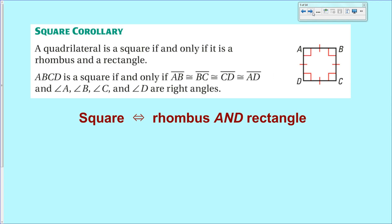And finally, the square corollary, which says exactly what you might think it is, that if you have a quadrilateral that is a square, then it must have four right angles and four congruent sides. And conversely, if you have a quadrilateral that has four right angles and four equal sides, it better be a square.